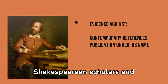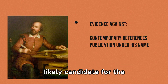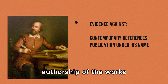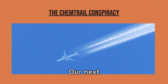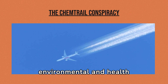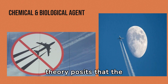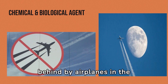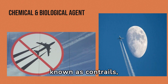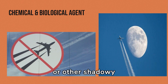The consensus among Shakespearean scholars and historians is that William Shakespeare of Stratford-upon-Avon is the most likely candidate for the authorship of the works attributed to him. Our next conspiracy is the chemical trail conspiracy, which taps into environmental and health fears, proposing that the trails left by aircraft are part of a larger, more sinister agenda. This conspiracy theory posits that the white trails left behind by airplanes in the sky, commonly known as contrails, are actually chemical or biological agents deliberately sprayed for sinister purposes by government agencies or other shadowy groups.